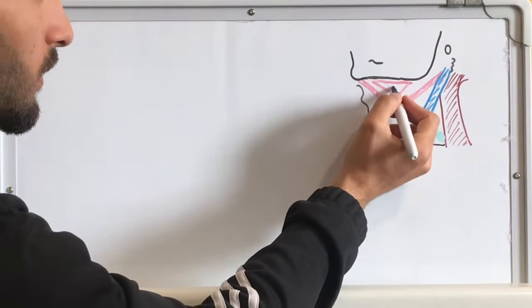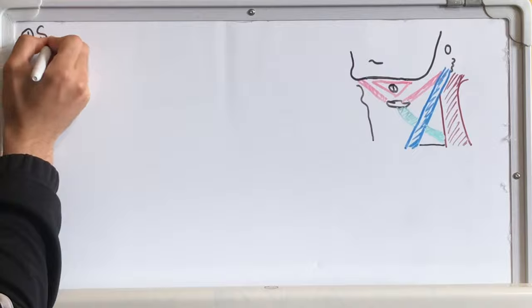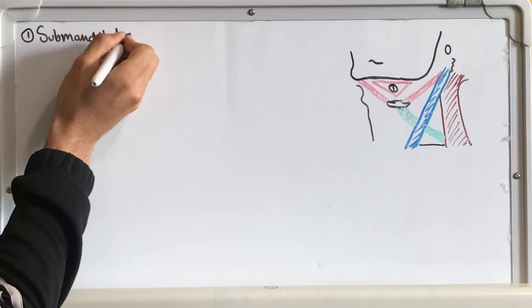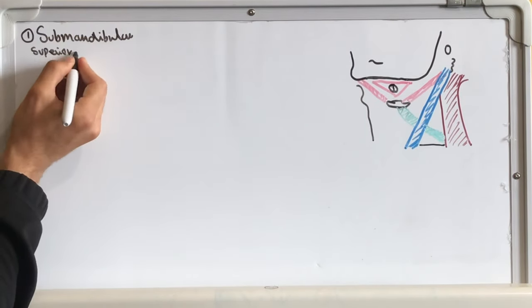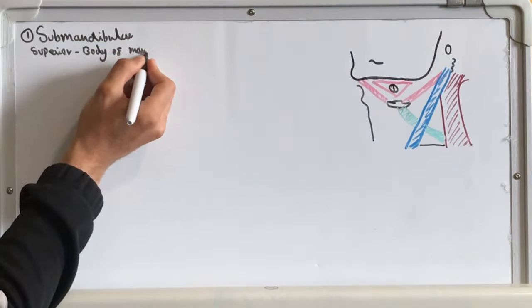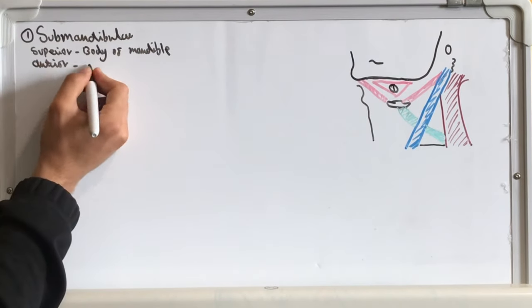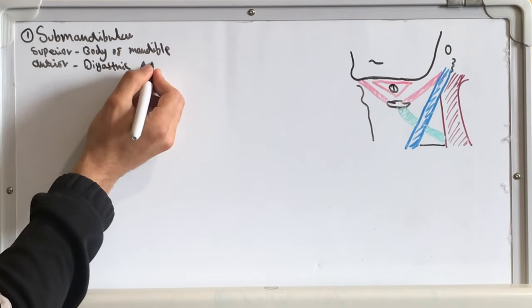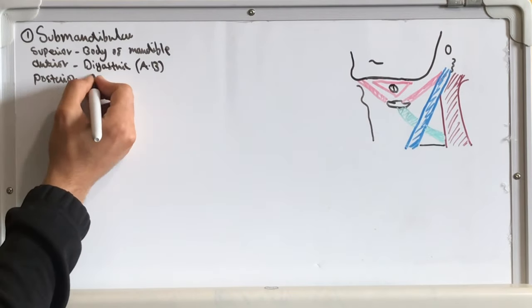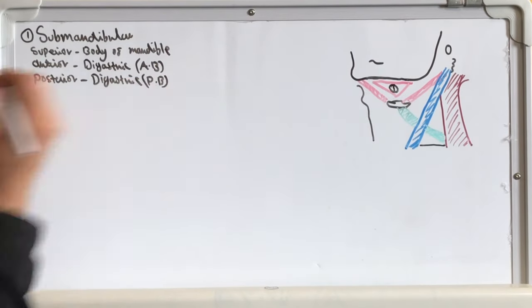The first triangle we're going to work out is the submandibular triangle which has a superior border - its superior border is the body of the mandible, its anterior border is the digastric muscle anterior belly and its posterior border is the digastric muscle posterior belly.